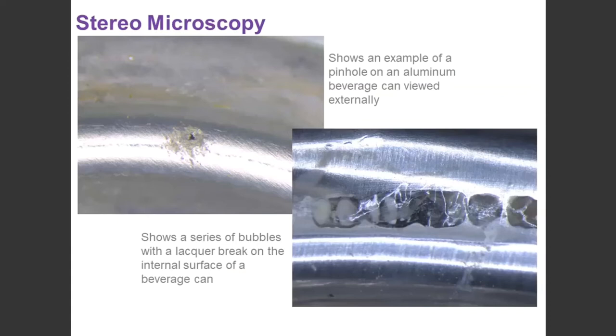These images here, both taken under a stereomicroscope, the top image is an external surface at the base of an aluminum can. We can see that there's actually a pinhole passing through that can. In this image in isolation would probably imply that there is an internal fault. The only disruption of the aluminum is located around that pinhole. The rest of the base is actually quite smooth.